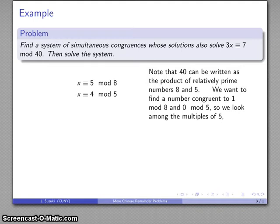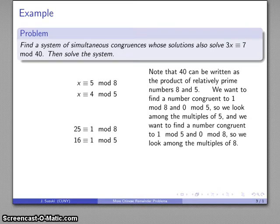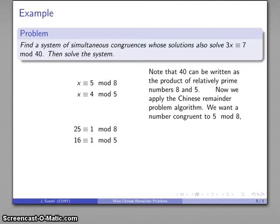So now, the key to the Chinese remainder problem is to find something that is congruent with respect to one modulus and 0 with respect to the product of the other moduli. I want something ≡ 5 mod 8 but 0 mod 5, so I look at multiples of 5. I find 25 ≡ 1 mod 8. I want a number ≡ 5 mod 8, so multiply by 5 to get 125. For the other, 16 ≡ 1 mod 5, and I want ≡ 4 mod 5, so multiply by 4 to get 64.